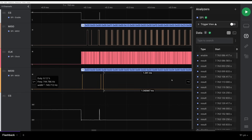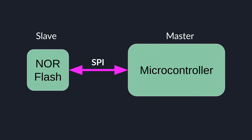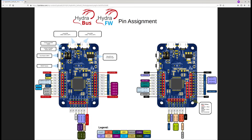I would always advise to dump the firmware offline. For this we need a microcontroller that can speak the SPI protocol. Let me introduce one of my best hardware hacking tools: the HydraBus.